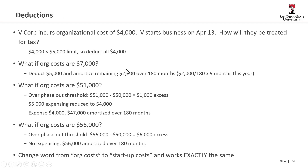Let's do some examples. V Corp incurs organizational costs of $4,000 and starts business in April. $4,000 is less than the $5,000 limit, so they can just deduct all $4,000.